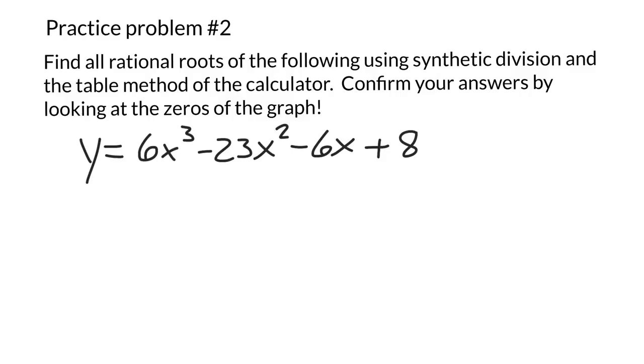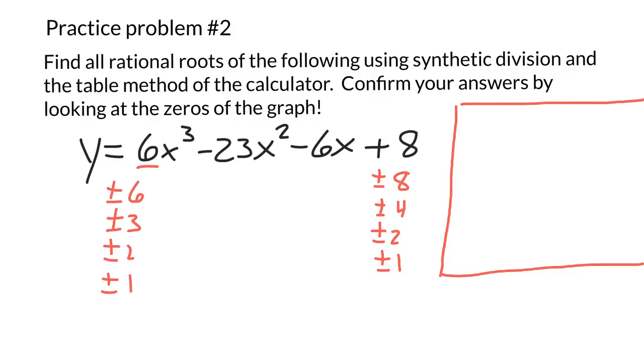So the rational roots theorem says that if we look at the coefficient of the front and consider all possible factors of it, so possible factors of 6 are plus or minus 6, plus or minus 3, plus or minus 2, plus or minus 1. And we look at the factors of 8, plus or minus 8, plus or minus 4, plus or minus 2, plus or minus 1. And put those all together in a way that puts the factors of the constant on top of the factors of the leading coefficient that we have a potential set of zeros for this polynomial.